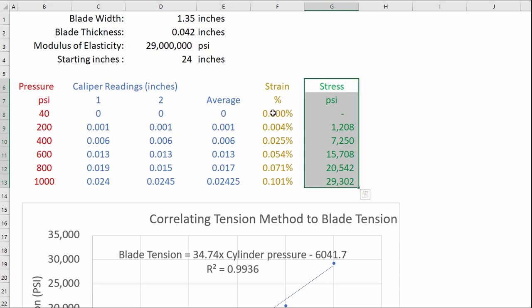For percent strain is simply the caliper reading in my case the average caliper reading here divided by the initial starting point of 24 inches so 0.101 is equal to, let me double click on that you can see what the cells are, okay E13 which is this cell right here 0.02425 divided by the 24 inches.